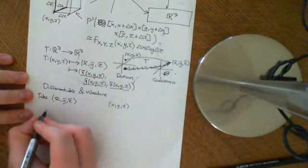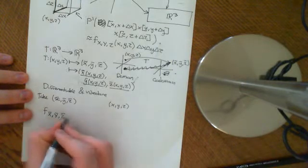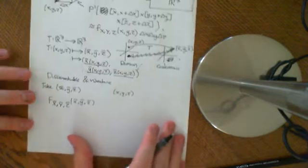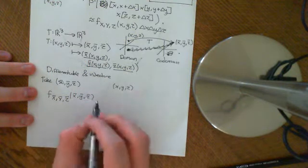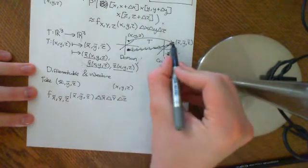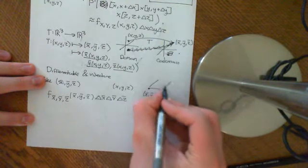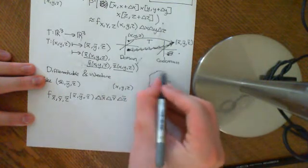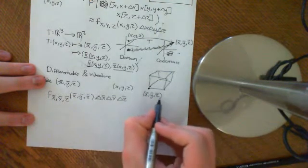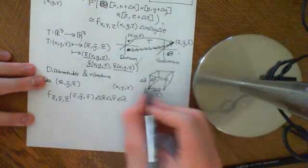If we want to know what the PDF of this new random variable is — which we might call the random variable x̄, ȳ, z̄ — we'll define it so that if you multiply it by δx̄, δȳ, δz̄ (taking a little box around the point x̄, ȳ, z̄ of those side lengths), the PDF at that point times the volume of the little box δx̄·δȳ·δz̄ should equal the probability that the variable falls within that box.